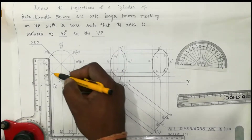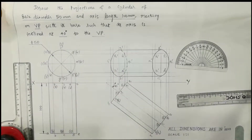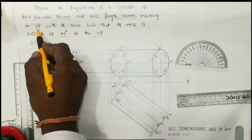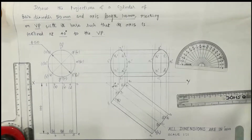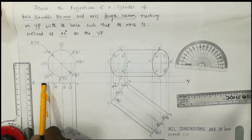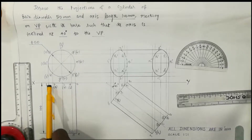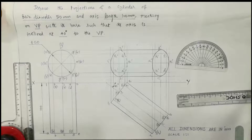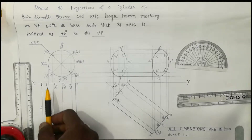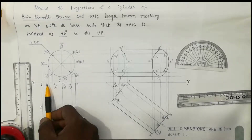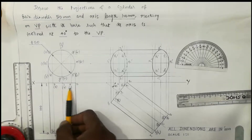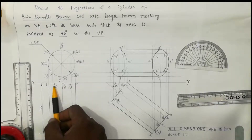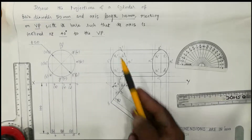Resting on VP means one end of the cylinder will be in contact with the XY line — remember this from the previous videos. Consider this rectangle as the simple position top view. The front view is marked in terms of letters A, B, C, D, E, F, G, H. The back part of the cylinder is marked in terms of numbers: 1, 2, 3, 4, 5, 6, 7, 8 — where 6, 7, and 8 are merger points with 3, 4, and 2 respectively.